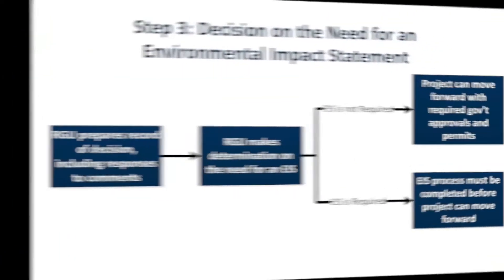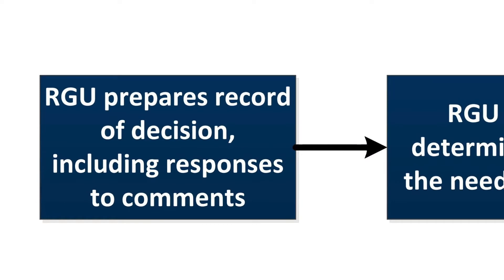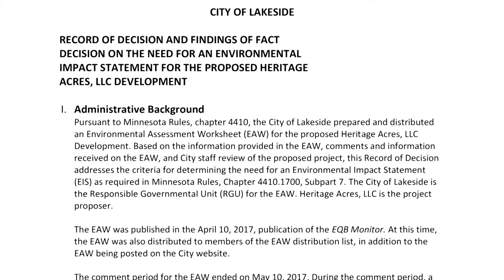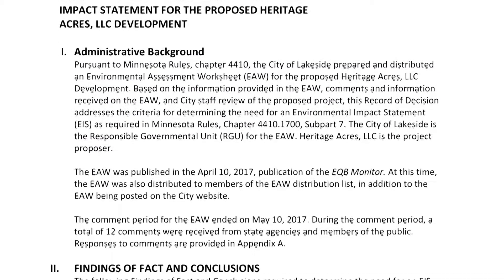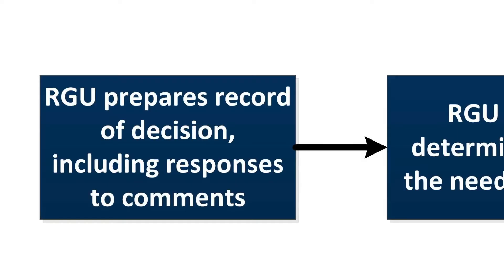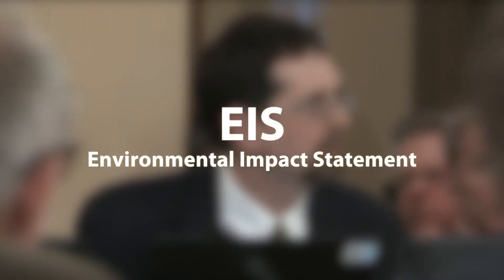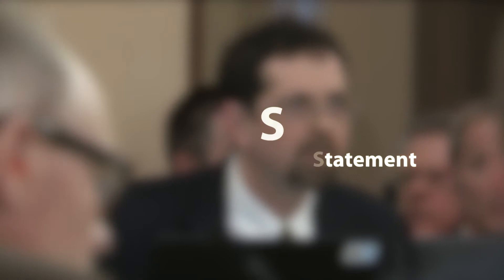Once the comment period ends, the RGU develops a Record of Decision, which includes specific findings from the EAW and written responses to comments. The Record of Decision, along with criteria in Minnesota law, helps the RGU's board, council, or other governing body determine if additional environmental review is needed through the preparation of an Environmental Impact Statement, or EIS.